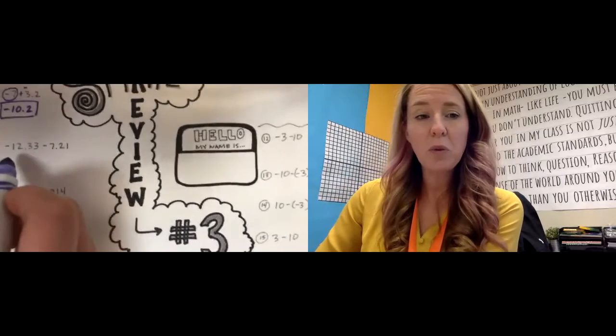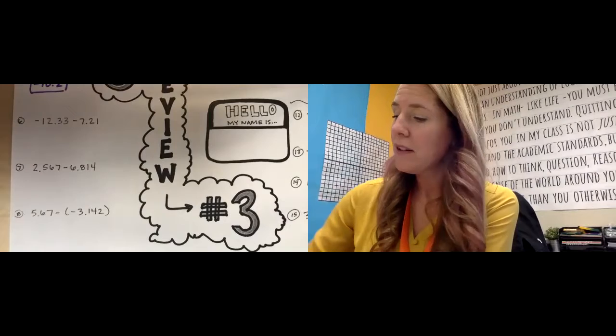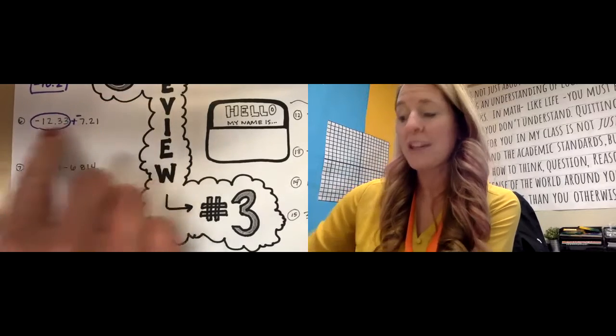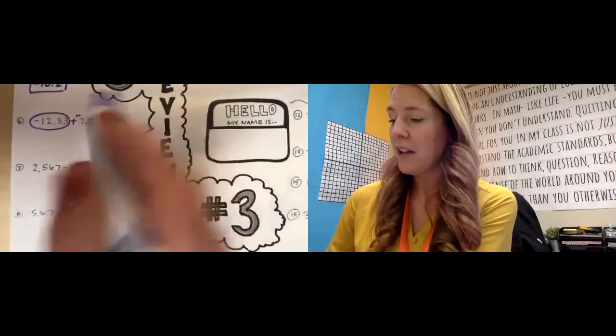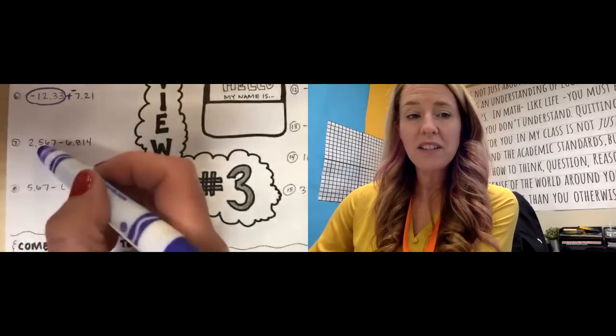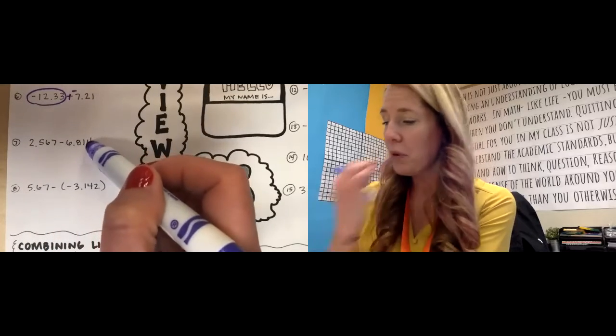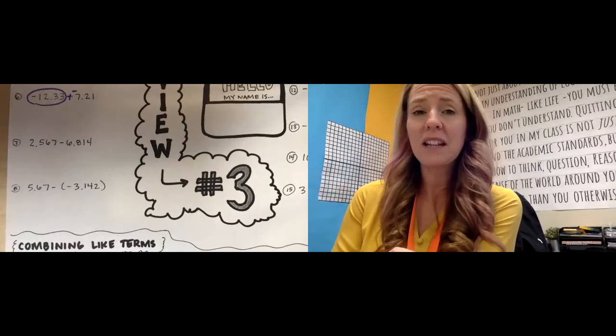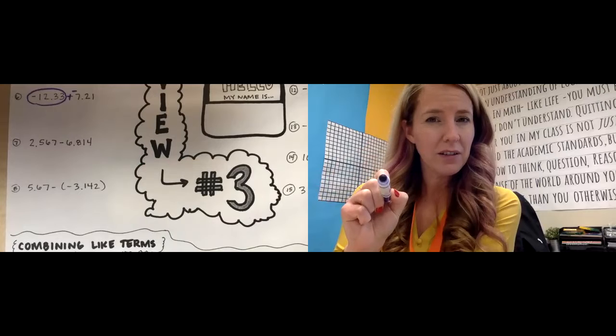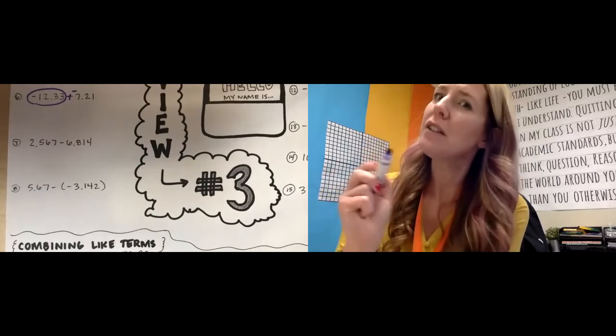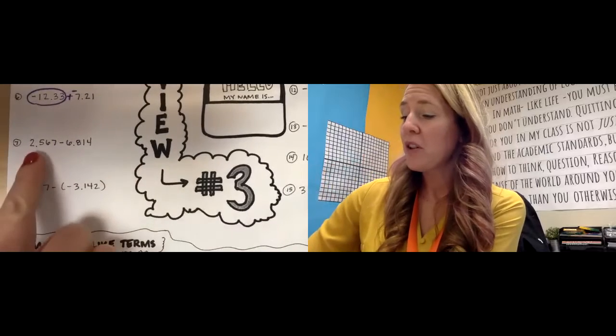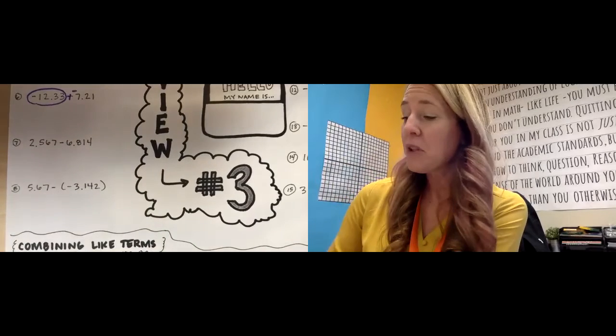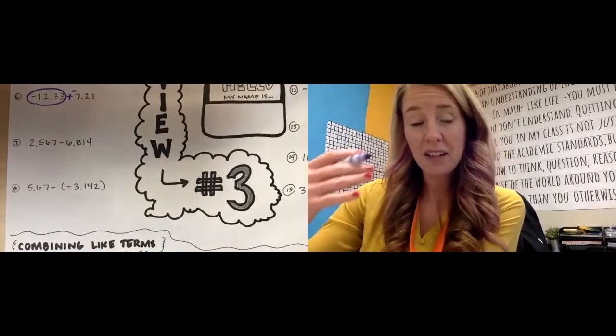The next one is negative 12.33 minus 7.21. I see it's a subtraction problem, so I'm going to keep change, change. That would be another one where we just add them up, pop a negative sign on there. I'm not going to do that whole problem. Let's look at this one right here: 2.567 minus 6.814. Okay, it's a subtraction problem. So you might be like, oh, this is easy, I'm just going to subtract the bigger minus the smaller, but it's not the same thing. It's like saying one minus three, not three minus one. Those are two different problems, although they sound really similar. So if you want to keep change, change, you can, and that might help you. But if you take a smaller amount minus the bigger amount, you're going to have to subtract big minus small, and it's going to be a negative answer.